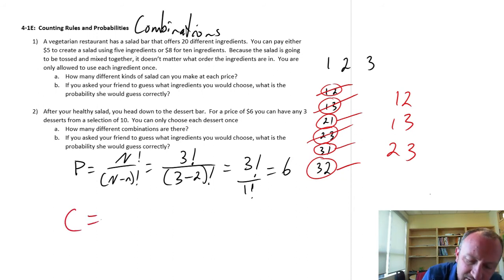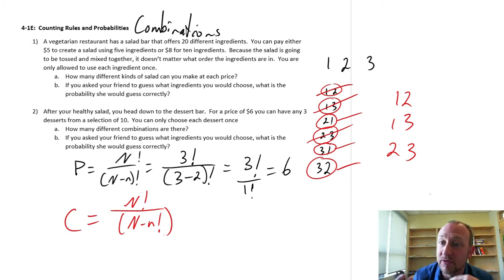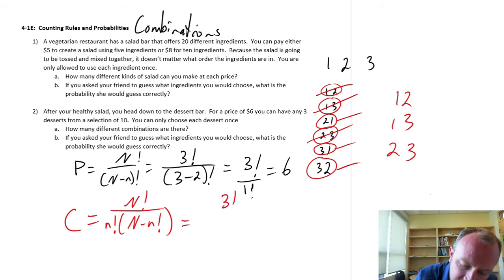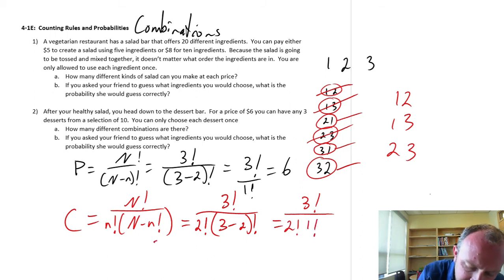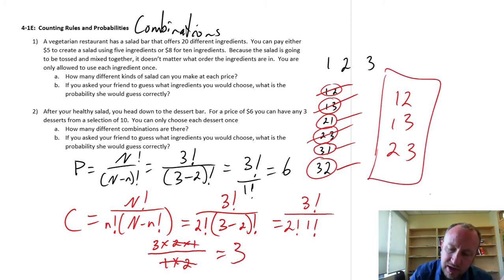How does our formula reflect this? Writing this out, here's the number of permutations that exist. But now we adjust for the fact that we're just choosing two values and I don't care what their order is. So I'm going to take out the number of orderings of those two values — that little n factorial. So here now I have 3 factorial divided by 2 factorial times (3 minus 2) factorial. This becomes 3 times 2 times 1, divided by 1 times 2, so this cancels, and I have 3. So here we have our 3 combinations.